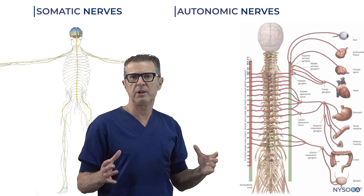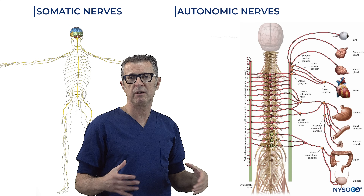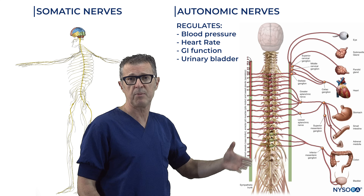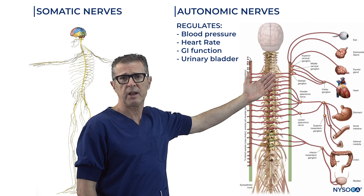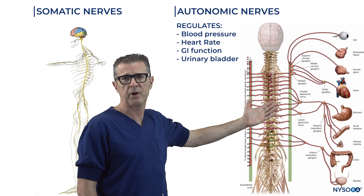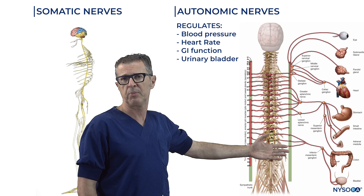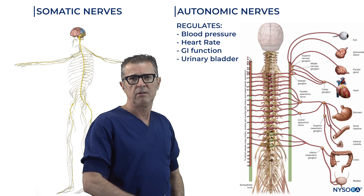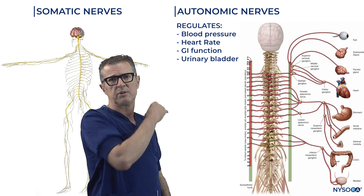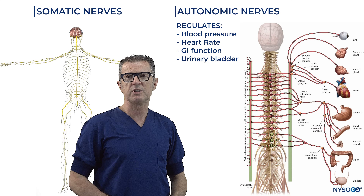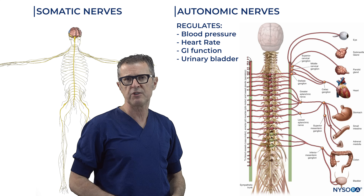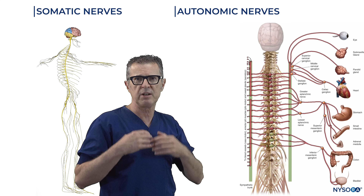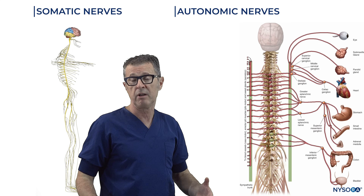The autonomic nerves regulate many body functions and organ functions — for example, heart rate, blood pressure, and the ability to void or urinate. The somatic nerves, on the other hand, transmit information from the periphery to the brain and from the brain to the periphery.